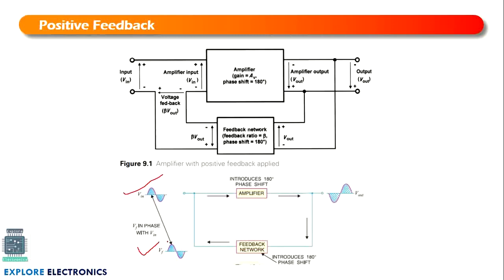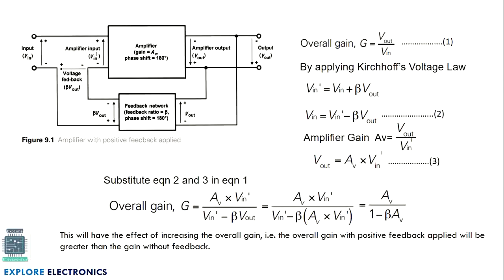These two signals are in phase. Now we need to derive the expression for the overall gain of the circuit to understand how the gain is going to vary. The overall gain G equals Vout divided by V_in. Applying KVL to the input side, V_in_dash is the signal coming into the amplifier after the feedback network. So V_in_dash equals V_in plus β times Vout, because in positive feedback the input signal and feedback signal are added.